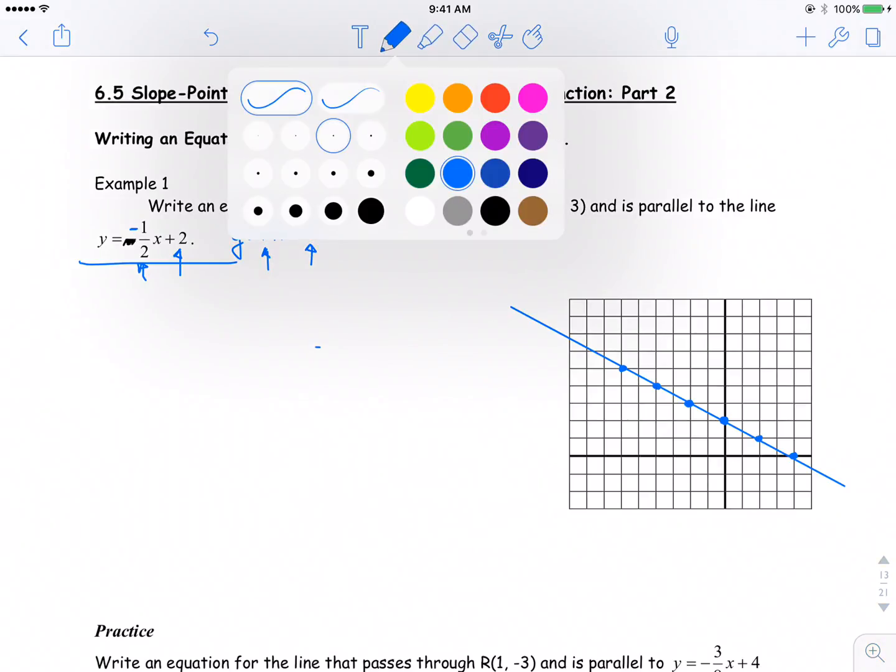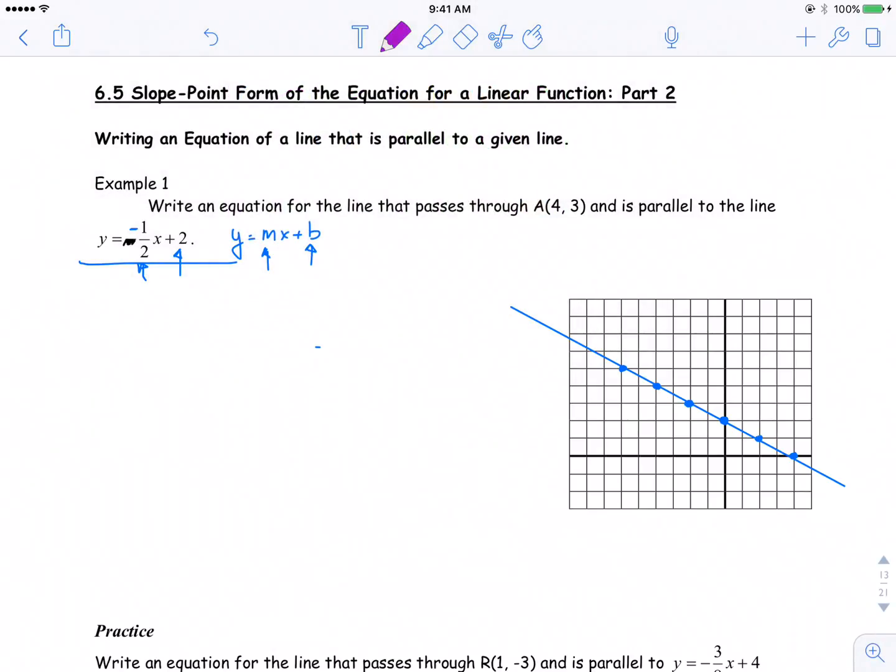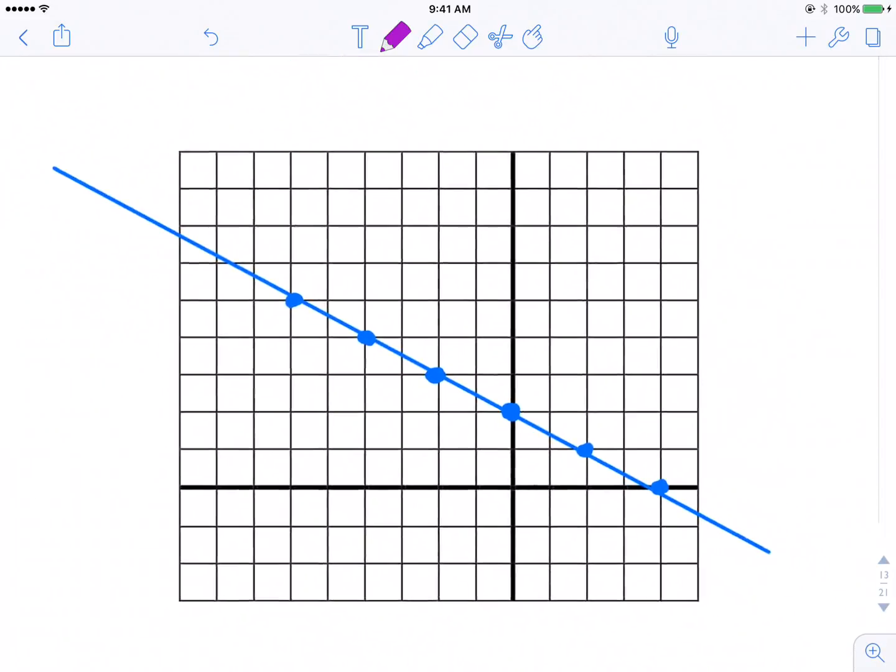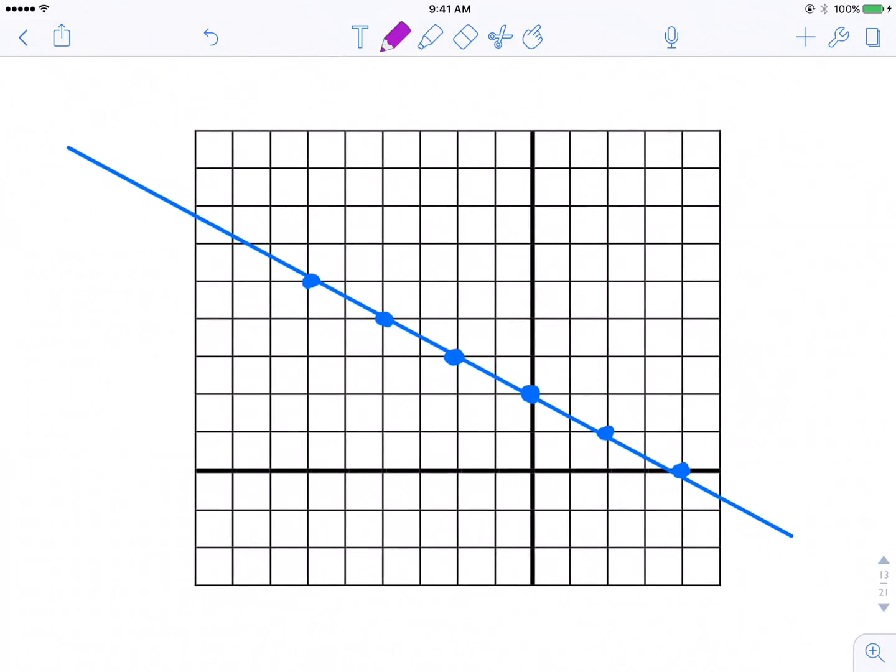Then we start working and trying and playing or working with the other part of the question. It says write an equation for the line that passes through (4, 3) and is parallel to that line. So graphically, I could say, hey, you know what, if it's parallel, then it's going to have the same slope. And if it passes through (4, 3), (4, 3) is right here. And I know, so this is (4, 3), I know it's parallel. That means it's going to have the same slope, negative 1 over 2.